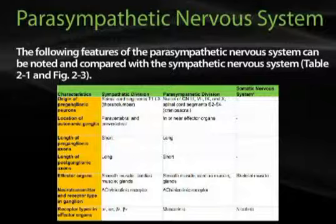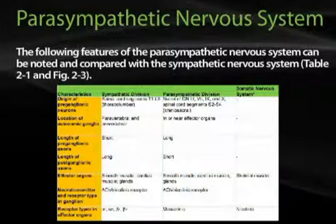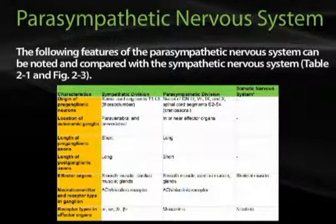In terms of the length of the pre- and postganglionic axons, in the sympathetic division you have short preganglionics and long postganglionics, and vice versa in the parasympathetic division. The effector organs across both autonomic divisions are smooth muscle, cardiac muscle, various glands — virtually every organ in the body. In contrast, the somatic nervous system has skeletal muscle as its effector organ.